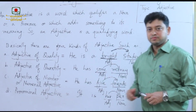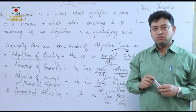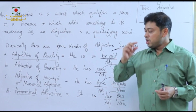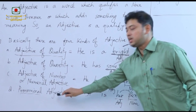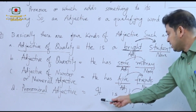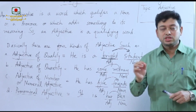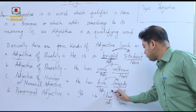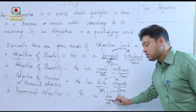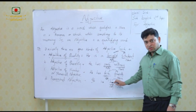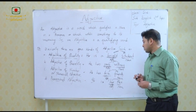The last part is pronominal adjective. The word 'pronominal' comes from the word 'pronoun', meaning it has a relationship with pronouns. When a pronoun acts as an adjective — that is, when a pronoun is qualifying another noun — it becomes a pronominal adjective. For example: It is her pen. 'Her' is conventionally a possessive pronoun, but here it is qualifying the noun 'pen', so it becomes a pronominal adjective.